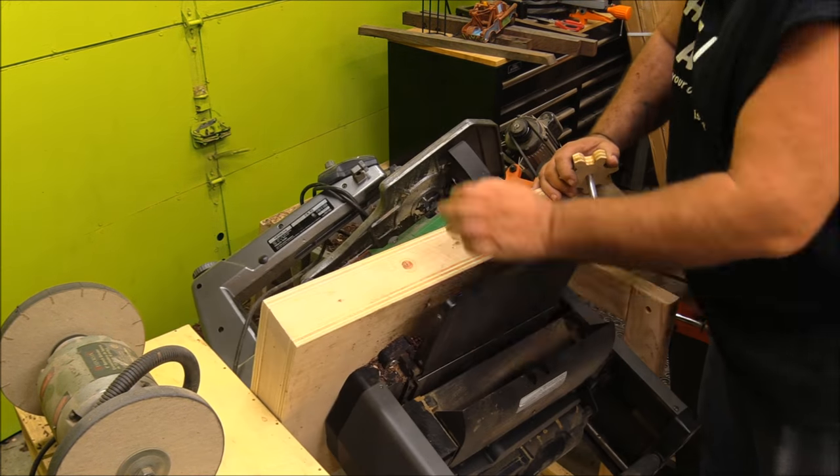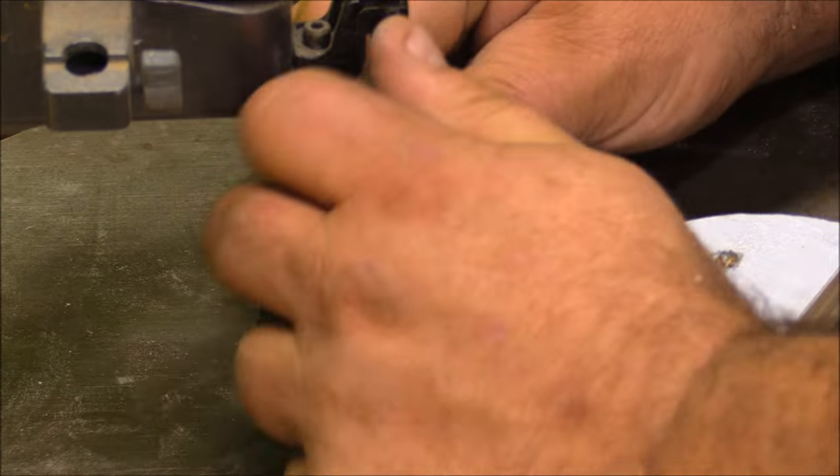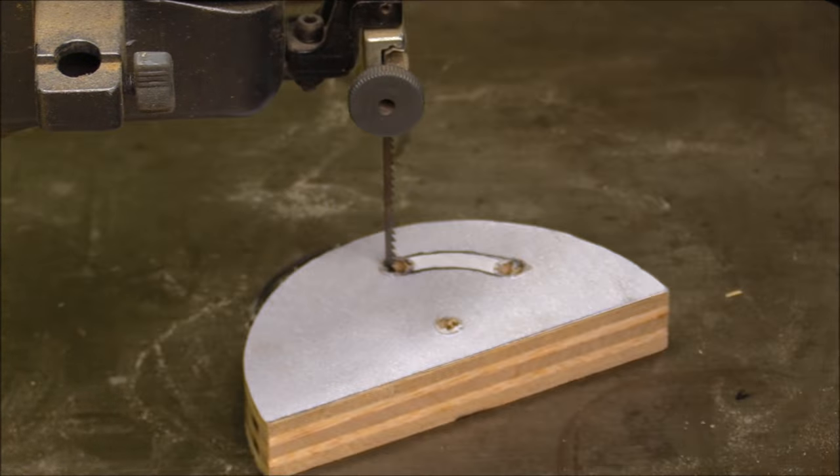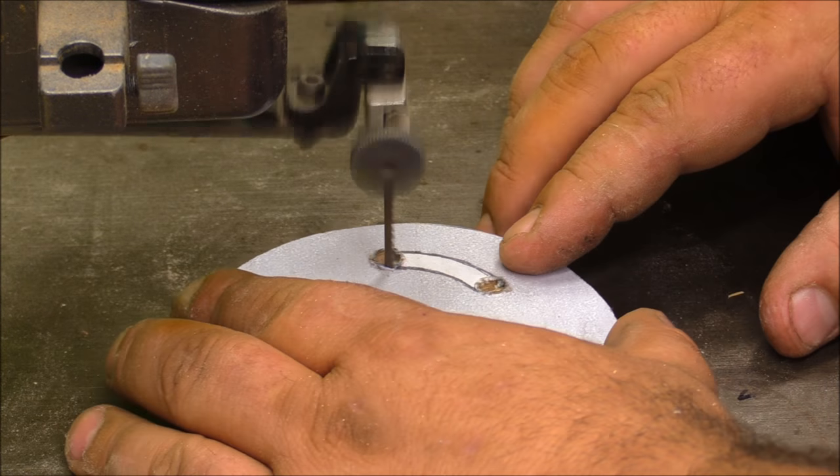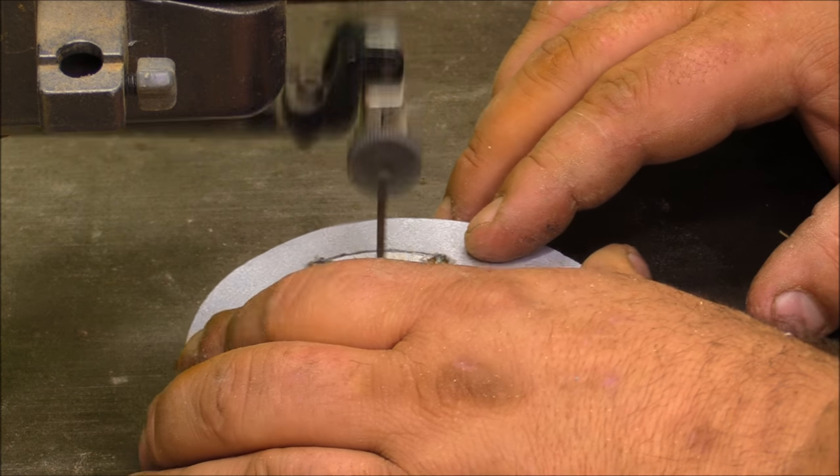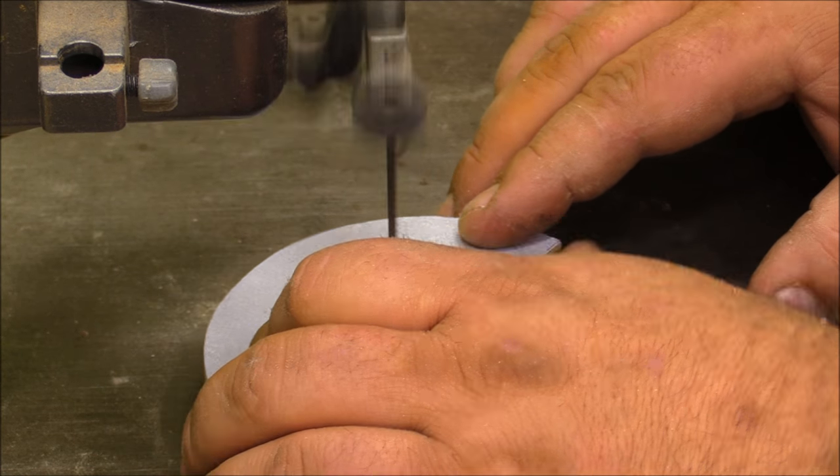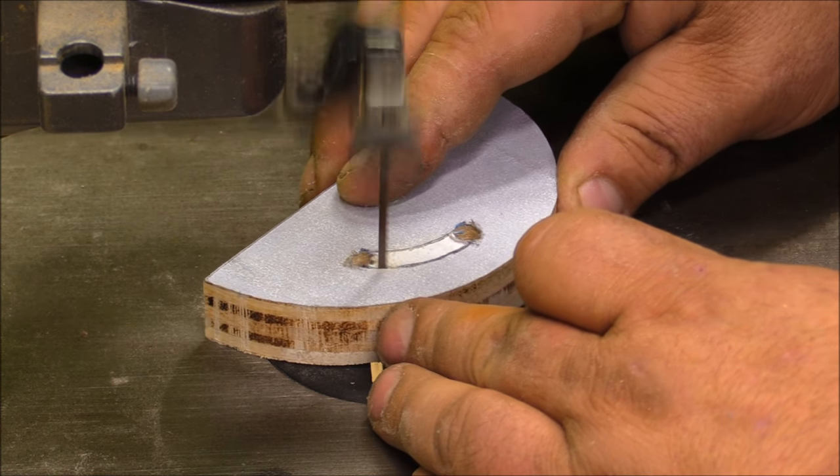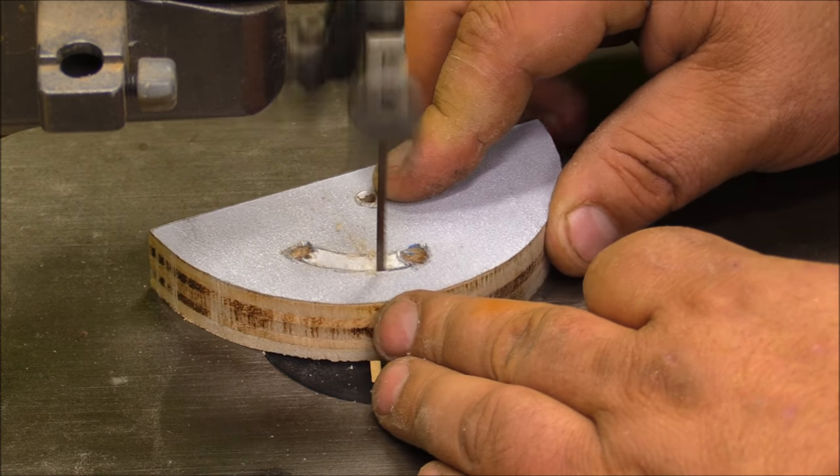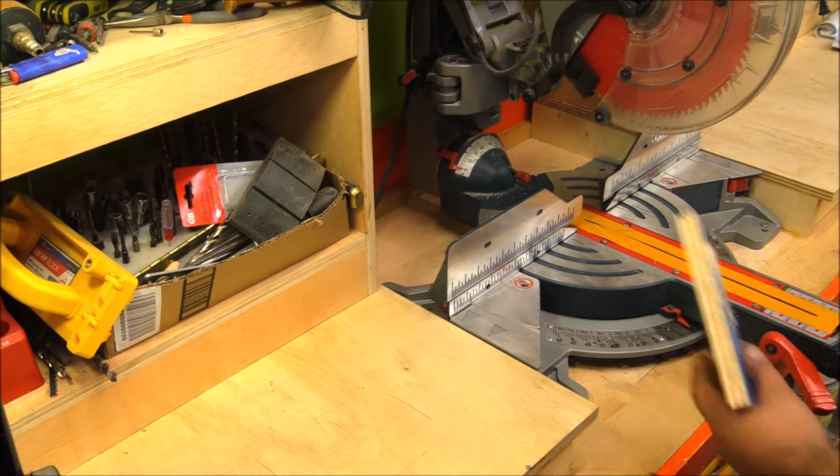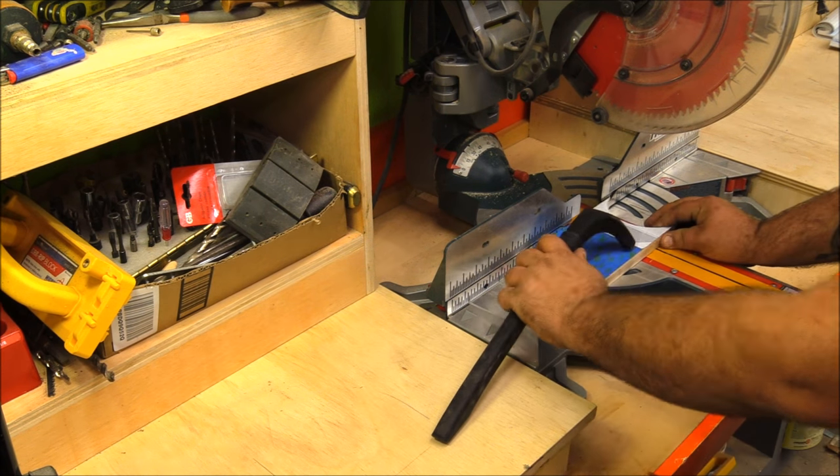This project is simple enough that you don't need a bandsaw to build it. You could cut it with a jigsaw or you could really just make the cut square rather than round. This slot for the adjustment needs to be in that arch pattern, so you could use a coping saw as well.